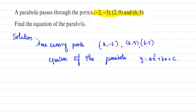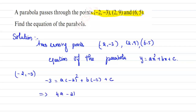Consider the point (-2, -3) and substitute into the general form of the equation. We get: -3 = a(-2)² + b(-2) + c, which implies 4a - 2b + c = -3. Mark this as equation 1.